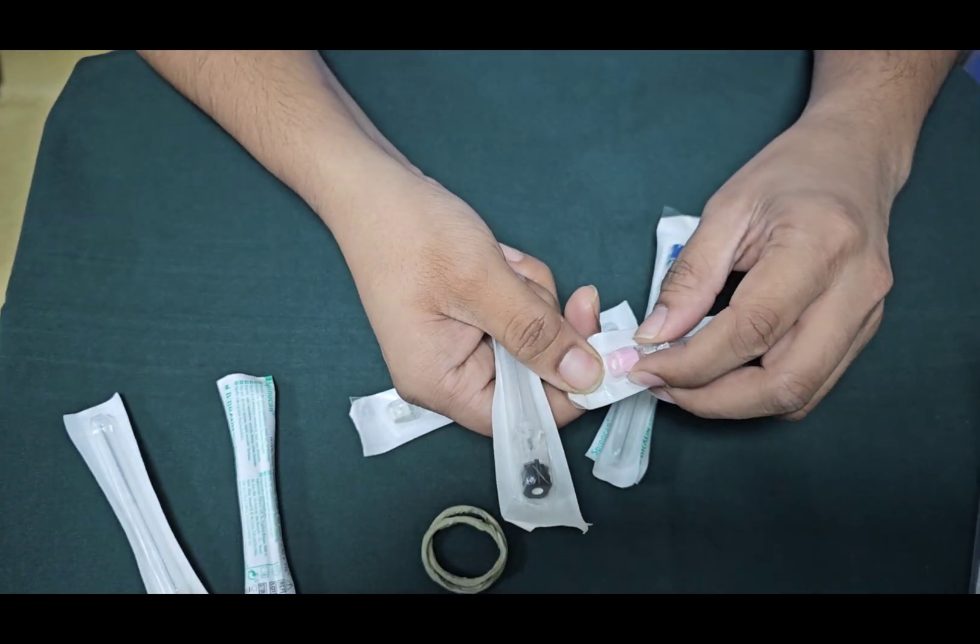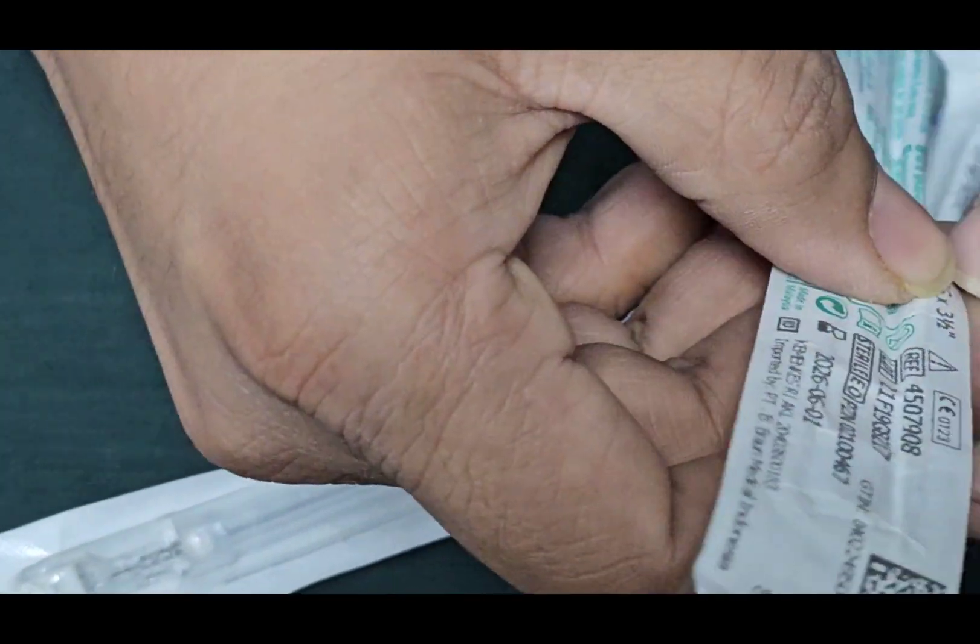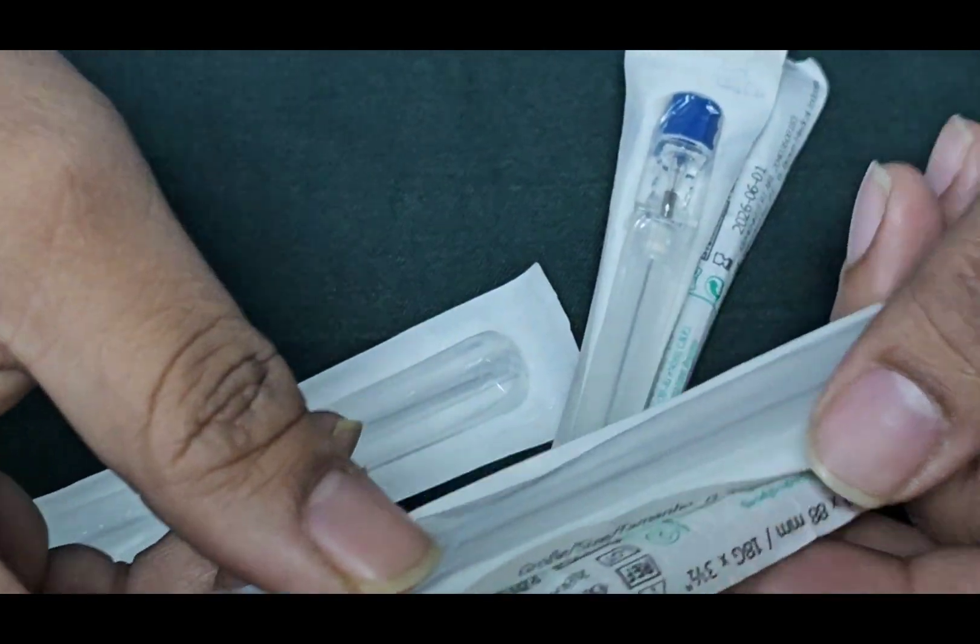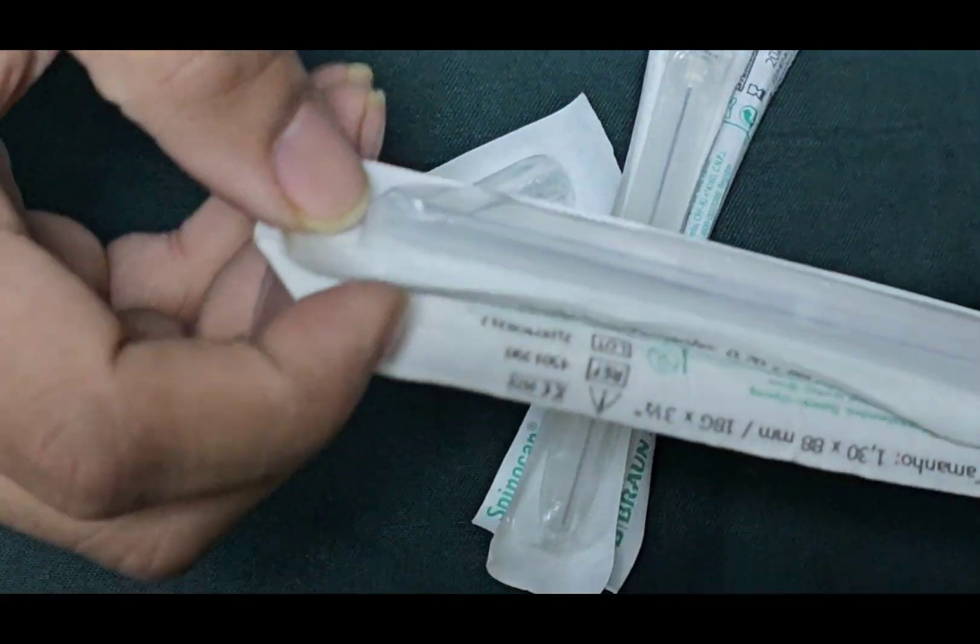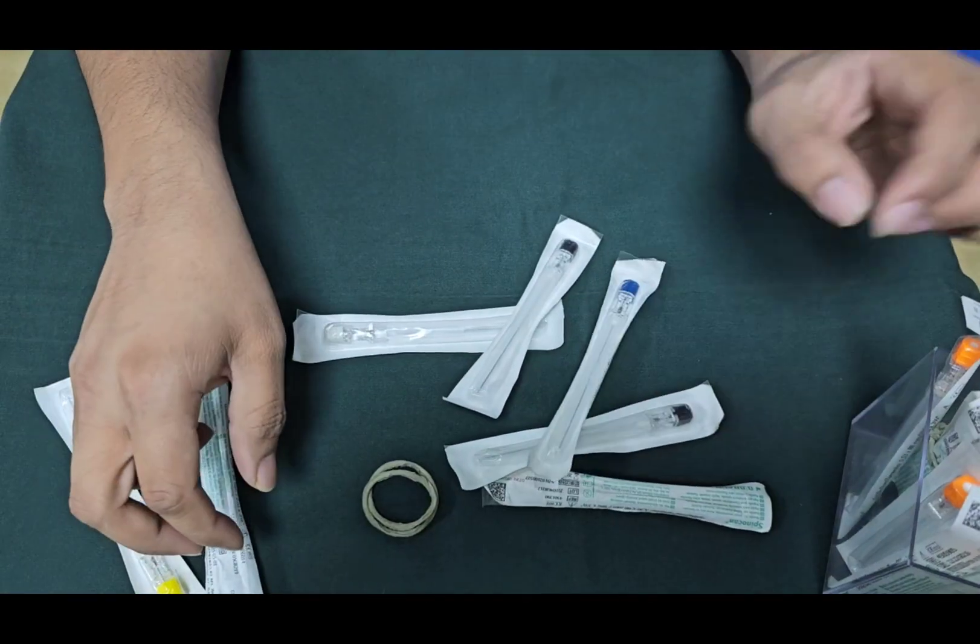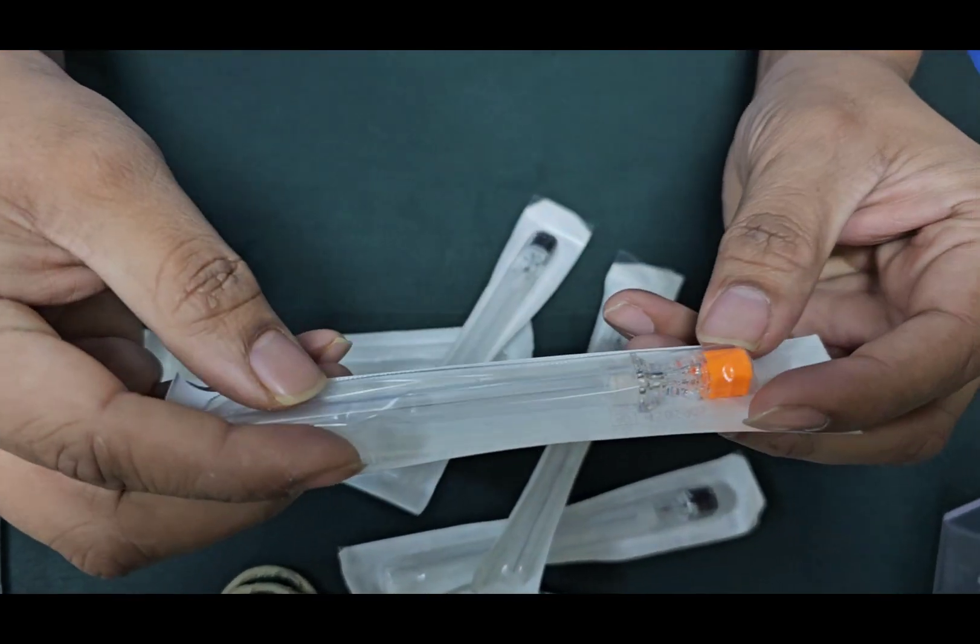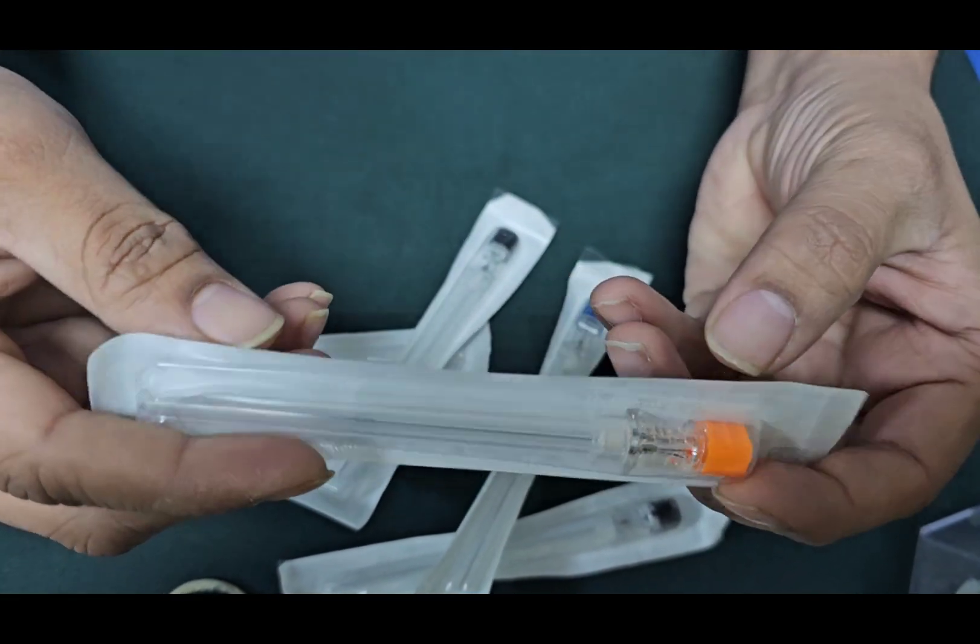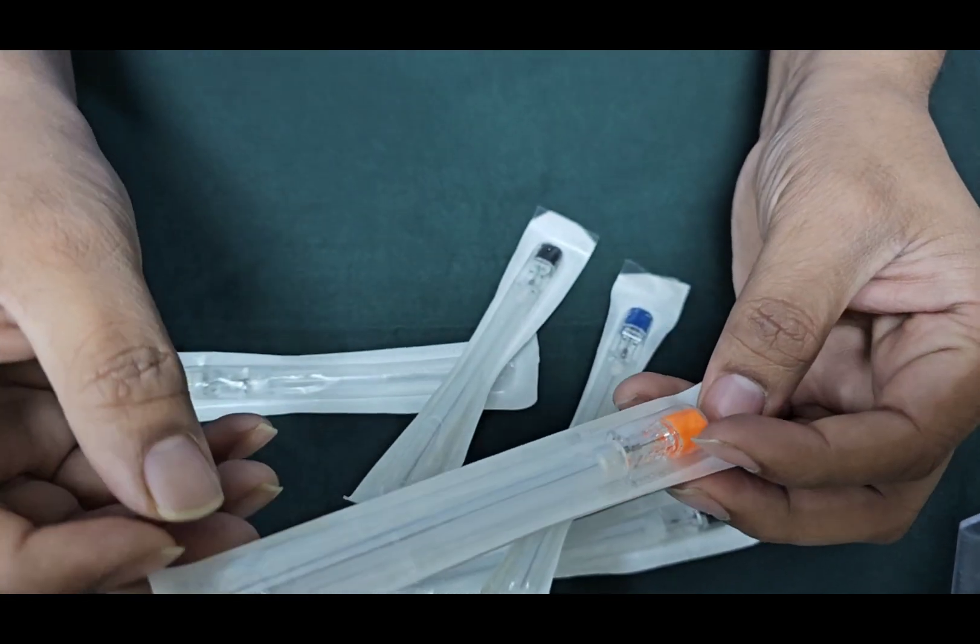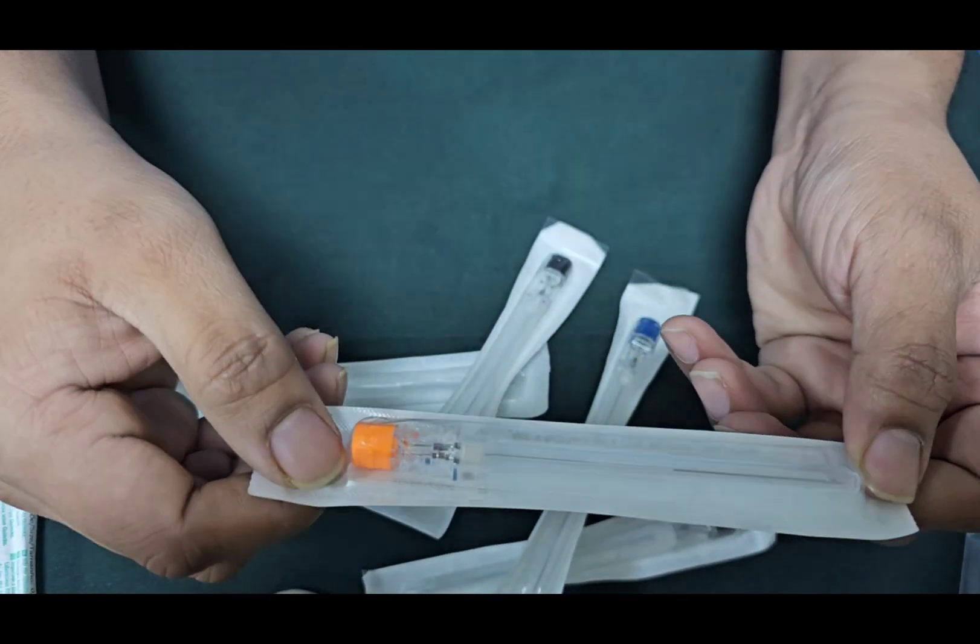This pink color coding 18 gauge or this 22 gauge needle we use. But for spinal injection or spinal anesthesia we use actually, we use 25 gauge spinal needle which color code is orange. And with this, with this we oftenly use and it is very much famous for reducing the dural headache.